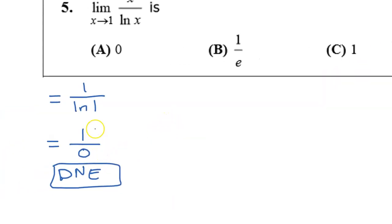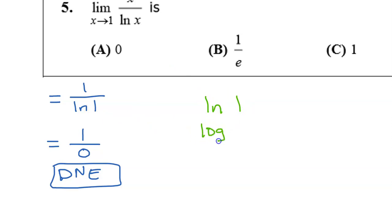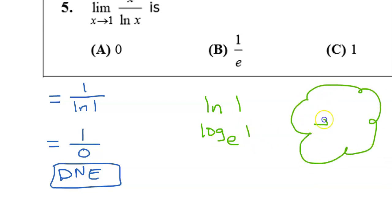Before we move on, in case you did not know that the natural log of 1 is 0, here's a quick side lesson. For example, log base 3 of 9 is the exponent that turns 3 into 9; since 3 squared is 9, the value is 2. Similarly, the natural log of 1 is the same as log base e of 1, so you should ask: e to what power equals 1? Anything to the 0 power gives 1, so the natural log of 1 equals 0.